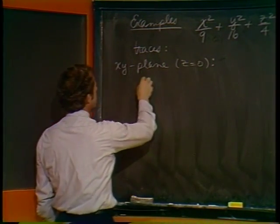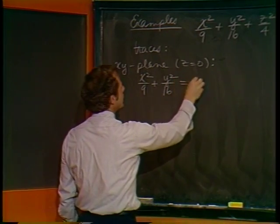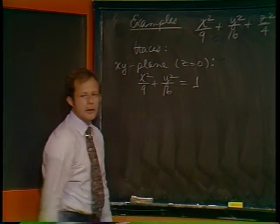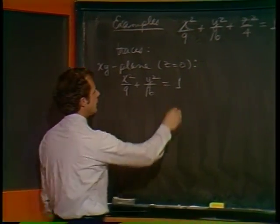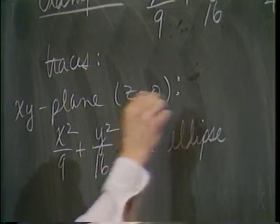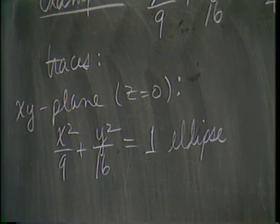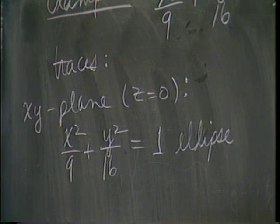That's when z equals 0. What we get is x squared over 9 plus y squared over 16 equals 1. The z term drops out because z is held equal to 0. Of course, that's an ellipse.